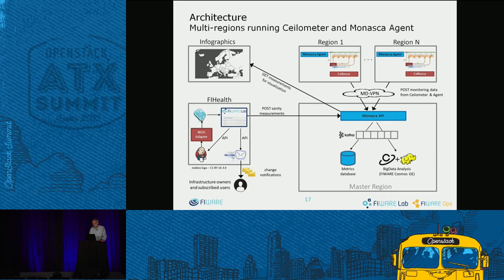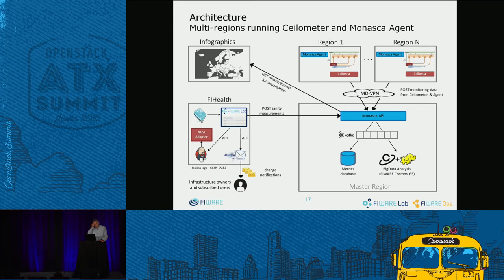Data also flows towards big data analytics components, in this case based on Hadoop. To eat our own dog food, we used the FIWARE generic enabler called COSMOS, which is Hadoop-based. On the left part of the architecture is a component called FI-Health - think of it as similar to Tempest. It continuously measures end-user functionality: whether creating a virtual machine, associating a network and IP address, or creating a volume works correctly. This data is sent to the Monasca API and stored in the database to provide a complete FIWARE Lab monitoring picture.